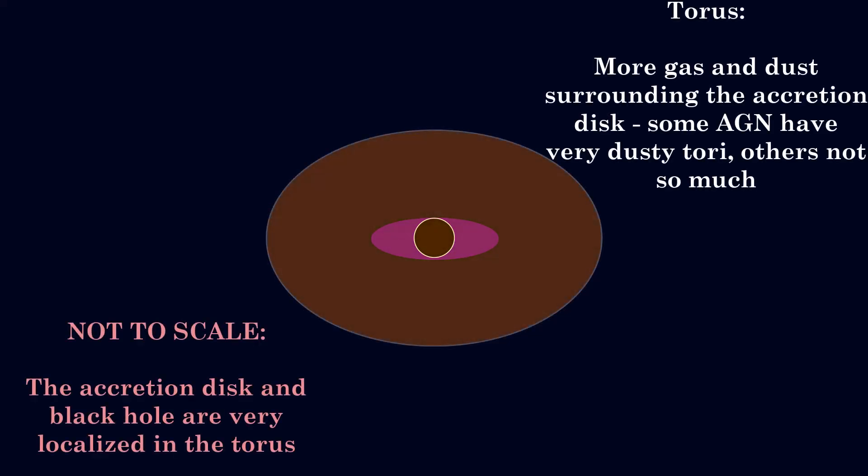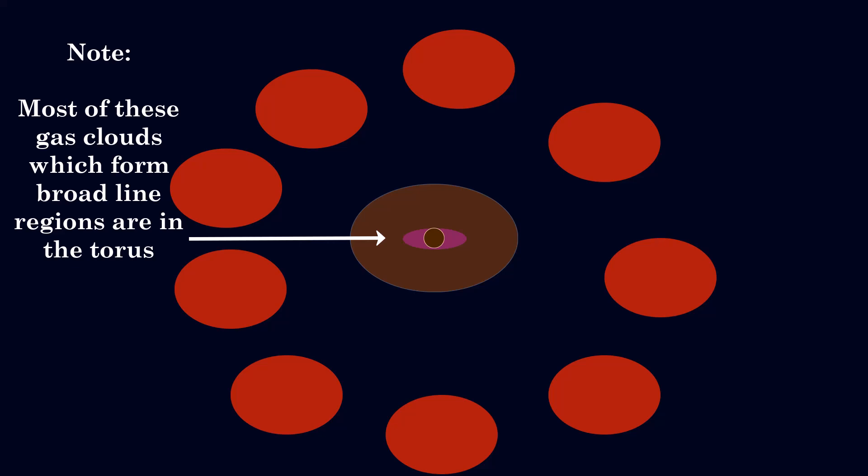These are leftover molecules from the galaxy's formation and the products of dead stars, which are gradually falling into the black hole. Surrounding the accretion disk is usually a dusty torus. This is a sort of doughnut shape of turbulent material which can obscure our line of sight to the central black hole. There may also be gas clouds much further from the black hole, which I'll get onto more later.